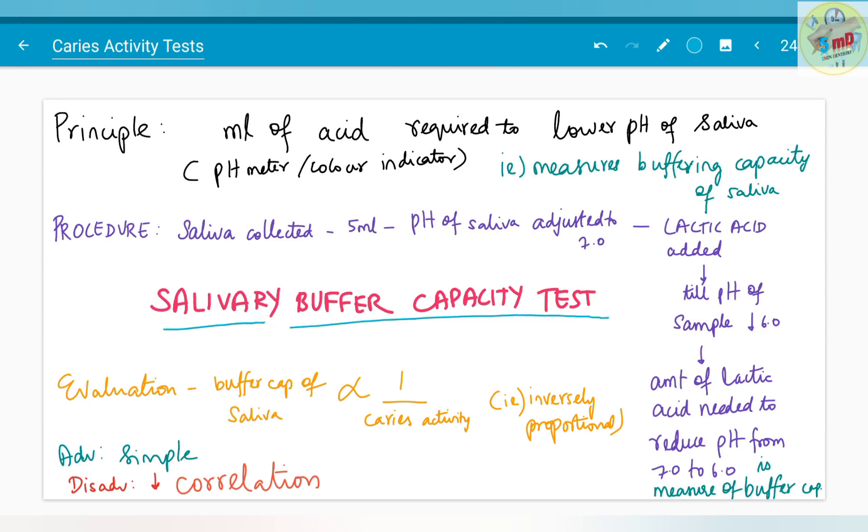That's all about streptococcus mutans test. Now we will see about salivary buffer capacity test. We have to remember that buffer capacity of saliva is inversely proportional to the caries activity. With that in mind, you have to remember that this test works by calculating the ml of acid required to lower the pH of saliva. It measures the buffering capacity of saliva. The more acidic the saliva is, the increased caries activity you will face.